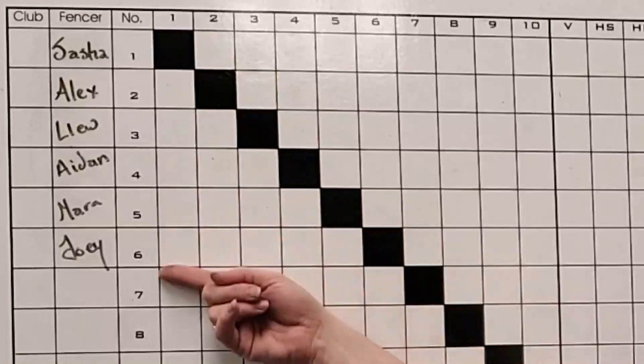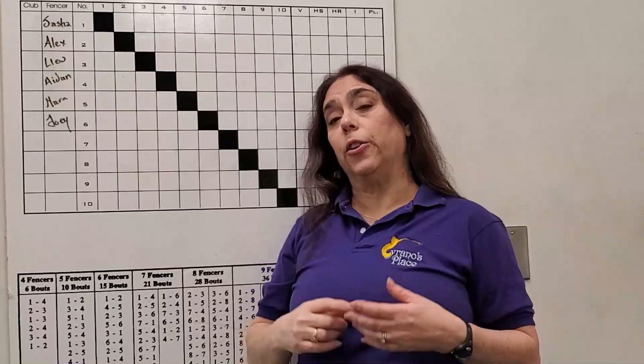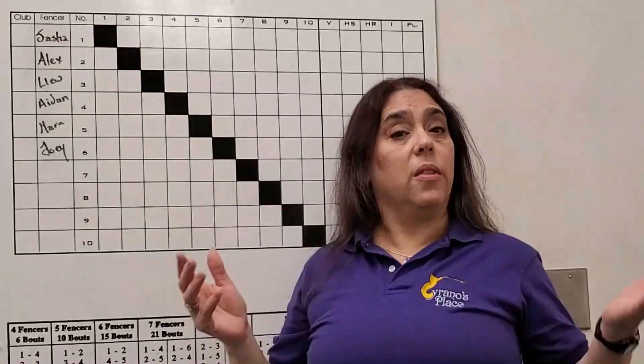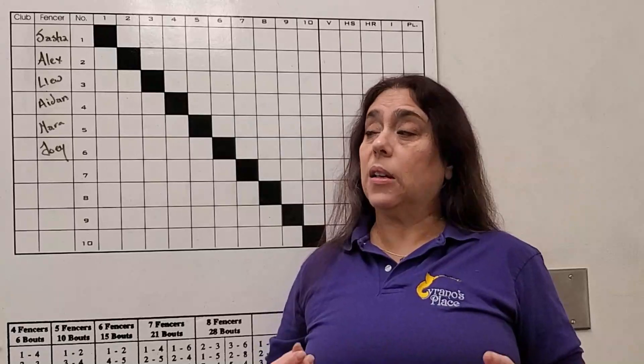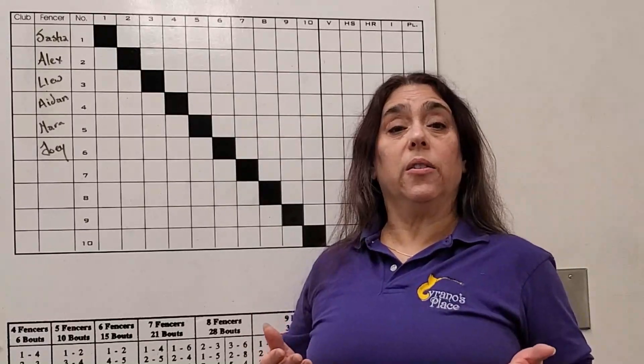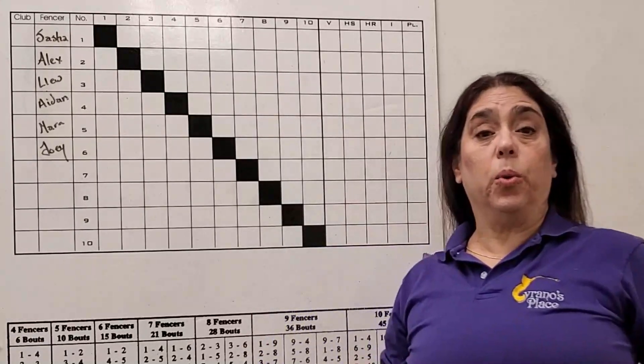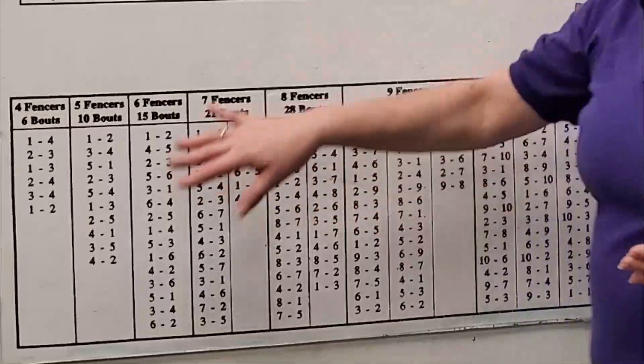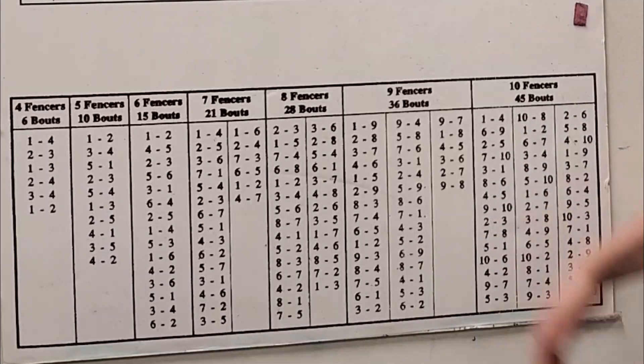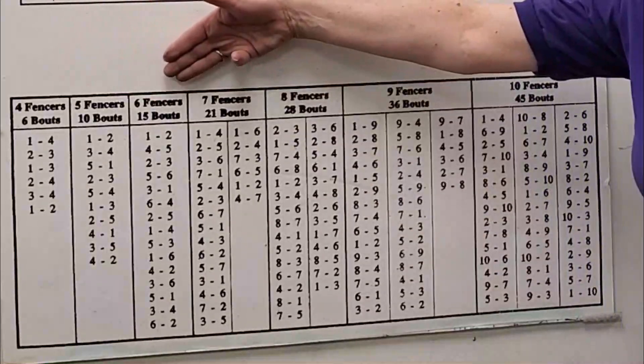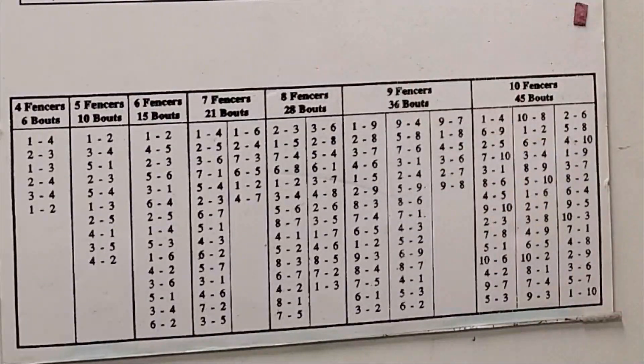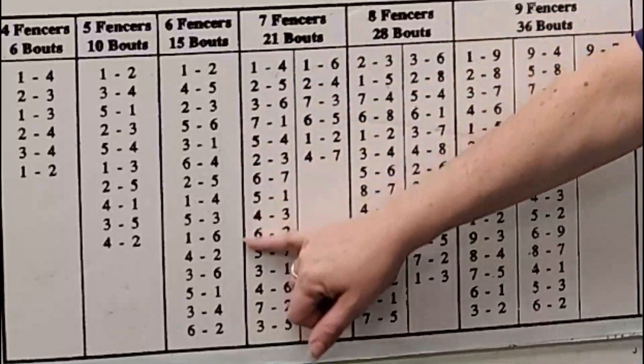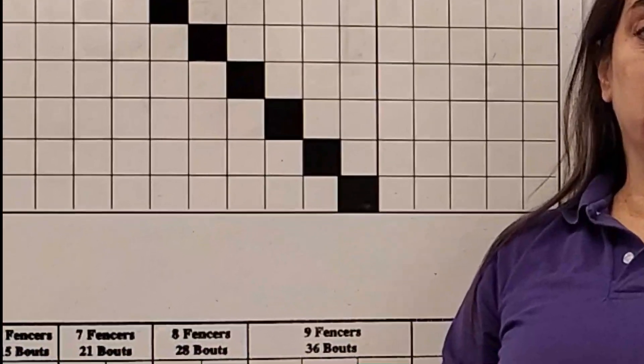Each fencer will have a number. Depending on your ref and the situation, they're going to call your fencer either by name or by number. They will start the pool as long as they have what they need to run it to conclusion. There is an order of bouts. You can see on the bottom of the sheet we have the numbers, depending on the number of people in the pool, as to what the order will be. Right now we're running a pool of six, so this will be our order.